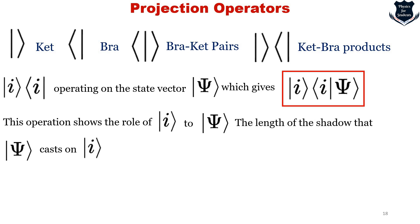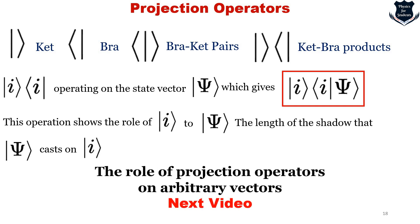We have now examined the ket and the bra and studied bracket pairs. We are now ready to study projections, which are ket-bra products — projection operators. For example, operating a projection operator on a state vector |ψ⟩ reveals the role of |i⟩ onto |ψ⟩, or the length of the shadow that |ψ⟩ casts upon |i⟩ — the ket vector casting a shadow on the bra vector. In the next part of the video, we will deal with projection operators on arbitrary vectors.